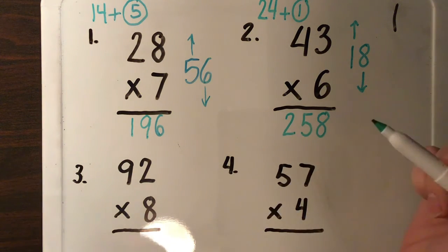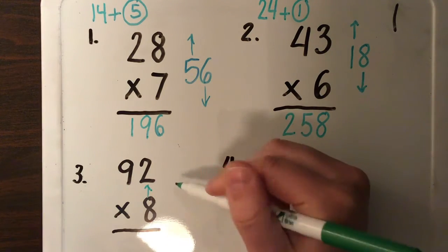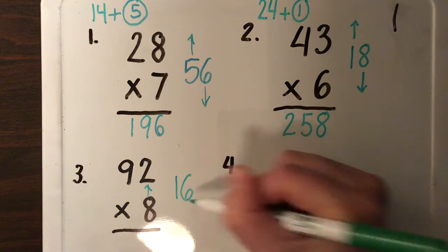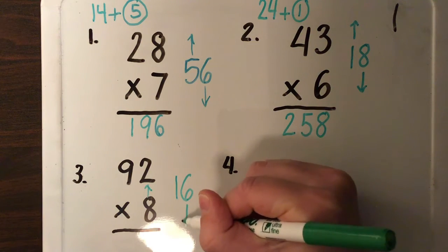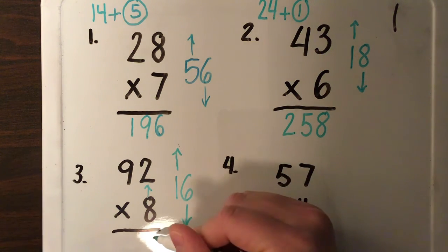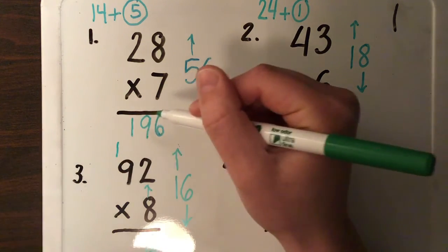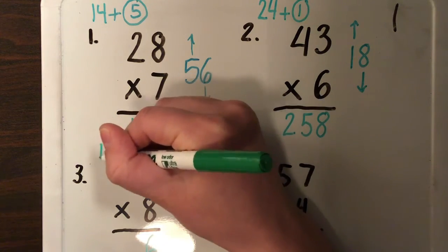Okay, now moving over here. I do this first. Eight times two is 16. I put my ones down and my tens up. My six goes down here. My one comes over here. I circle and I plus it.